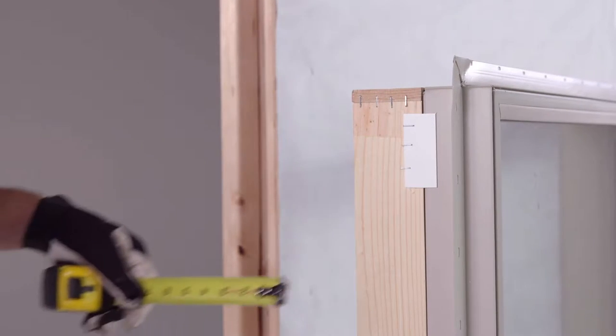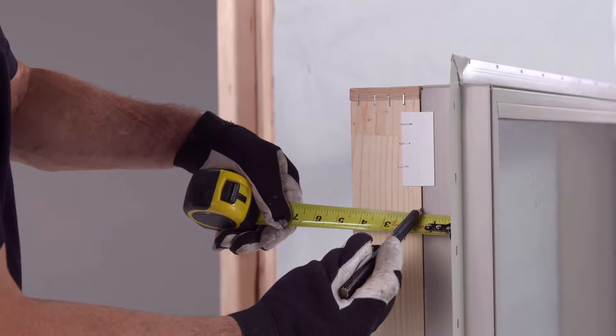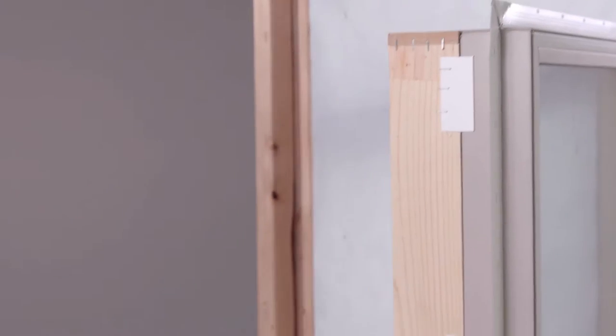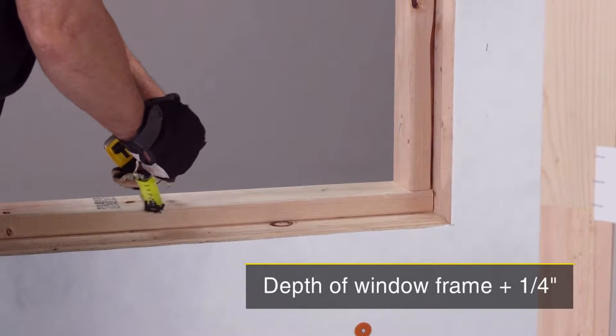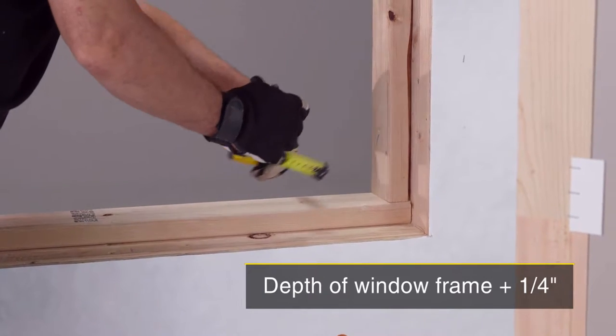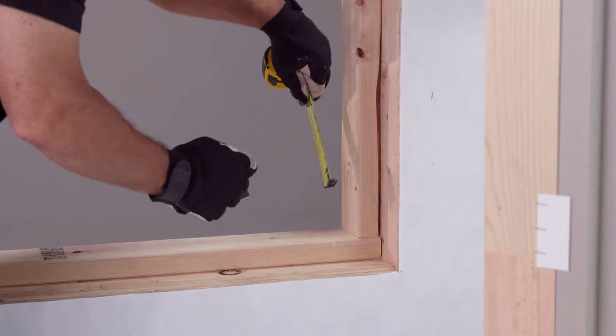Next, install the corner guards and sill flashing. First, measure the depth of the window frame, not including the jam extension. Then measure the same distance on the sill of the buck and add a quarter inch, and mark it with a pencil. This will show you where the interior edge of the flashing should be.